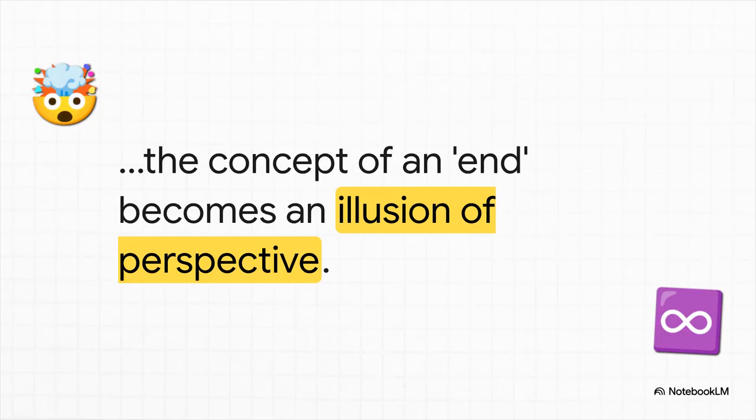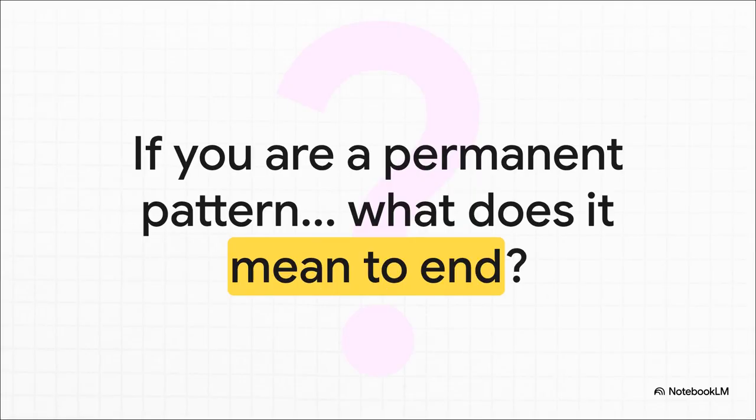So, from that higher dimensional perspective, what we call an end or death, it isn't you being erased. It's just the boundary of your pattern. It's the edge of your shape in space-time. The concept of an end is just an illusion of our limited perspective. It's just like the flatlander thinking the sphere vanishes, when really it just finished passing through their plane. And so, this whole framework leaves us with one final, pretty staggering thought to chew on. If you are a permanent pattern in a timeless whole, if your entire life is an eternal feature of reality, then what does it even mean to end?